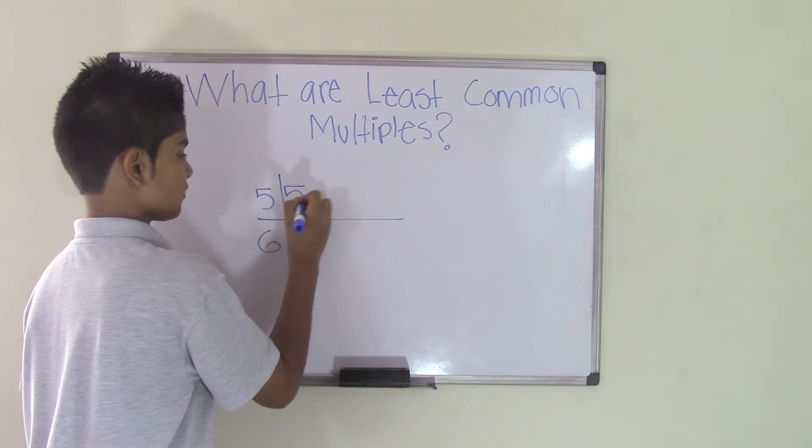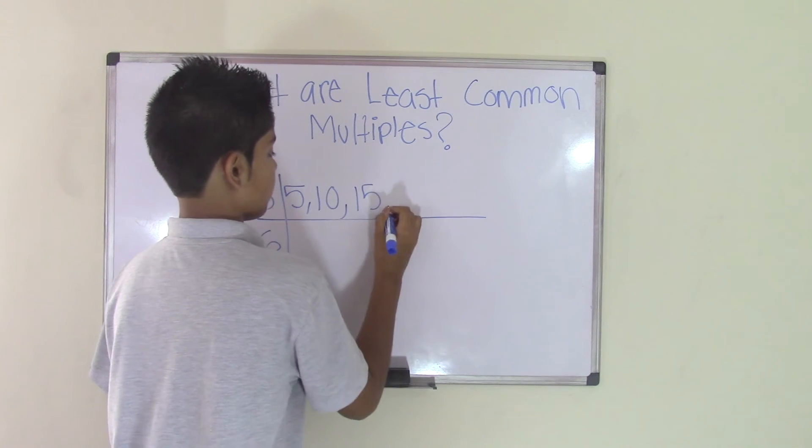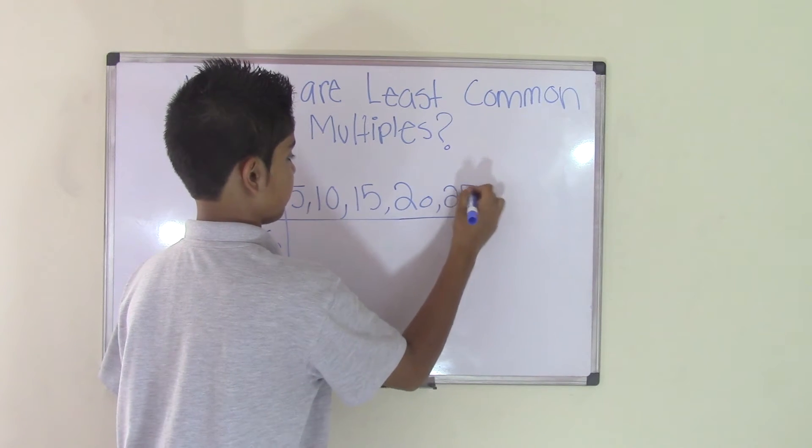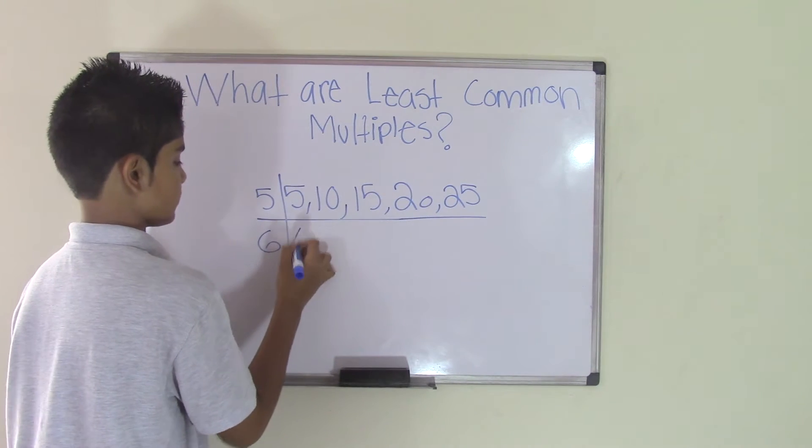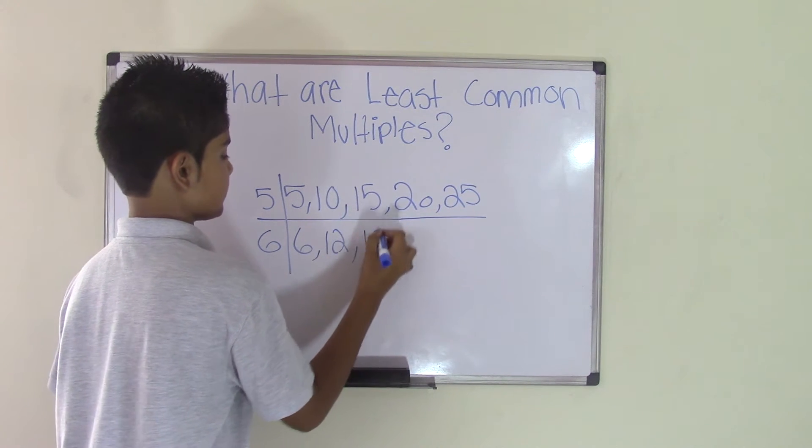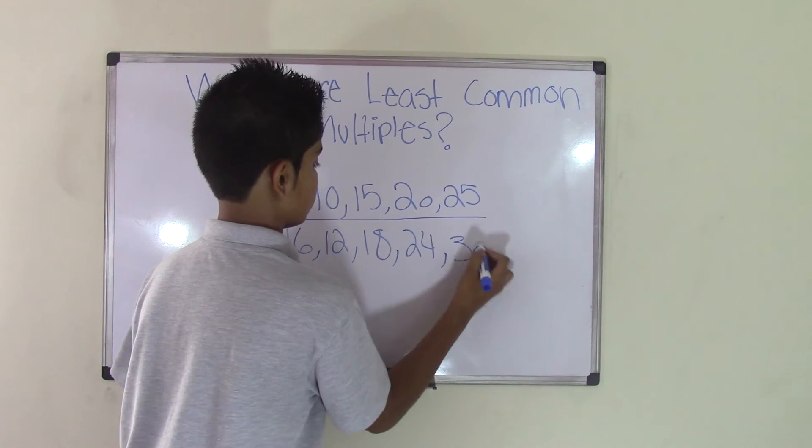5 times 1 is 5, 5 times 2 is 10, 5 times 3 is 15, 5 times 4 is 20, and 5 times 5 is 25. 6 times 1 is 6, 6 times 2 is 12, 6 times 3 is 18, 6 times 4 is 24, and 6 times 5 is 30.